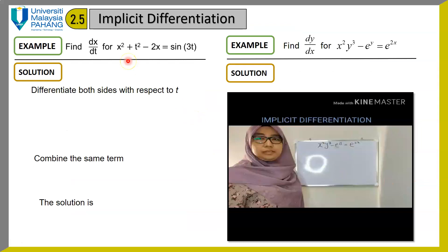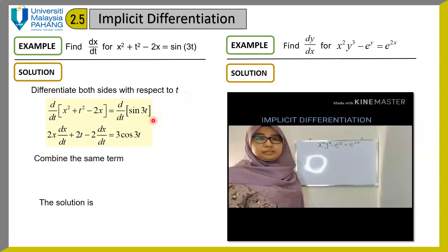Let's look at another example. Find dx/dt for x squared plus t squared minus 2x equals sin 3t. In this case, x is the dependent variable and t is the independent variable. First step: differentiate both sides with respect to t. As noted before, remember to multiply with the derivative of your dependent variable — dx/dt appears here and also here.